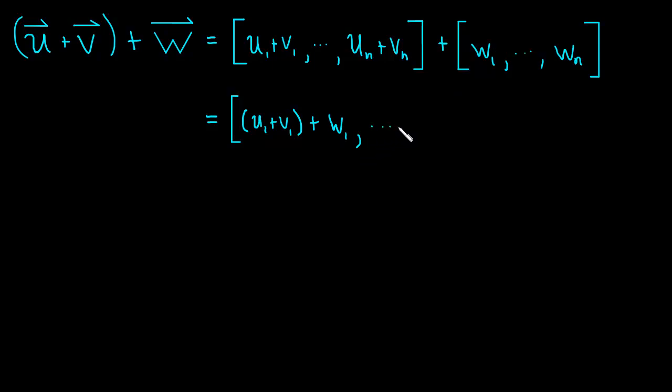And we do that for each component, each of the components, until we get to un plus vn plus wn. Okay. And now, again, we have real numbers here. And real numbers are associative. Addition of real numbers is associative. And so we're just going to use that property of real numbers.